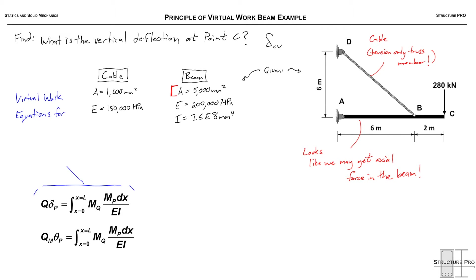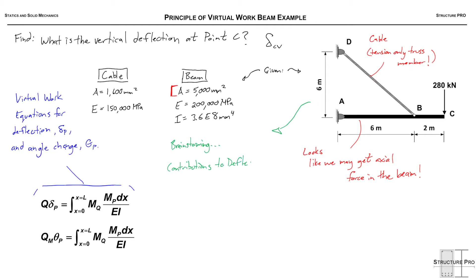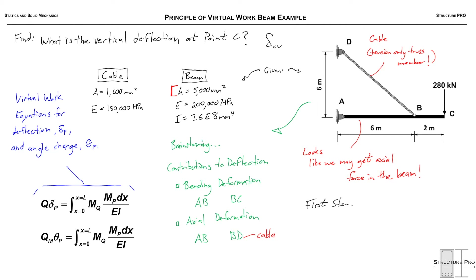At the bottom left are the virtual work equations for the deflection of a beam subject to a loading delta P, and also an equation for angle change theta P. Doing some brainstorming, we'll have bending deformations from A to B and from B to C, and axial deformations from the beam segment A-B and from cable B-D. The first step is always to define the P and Q systems.